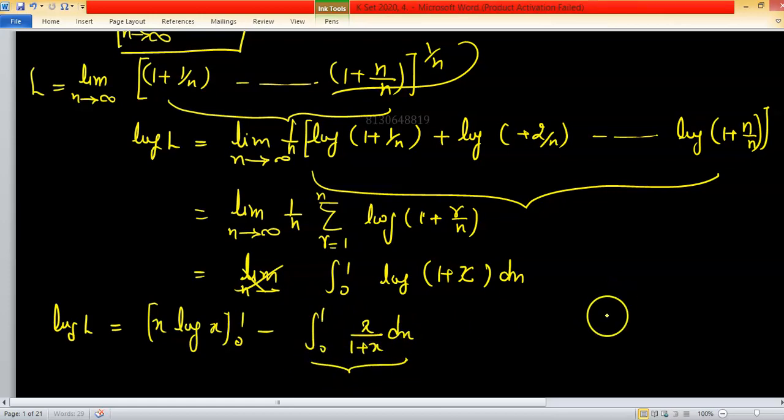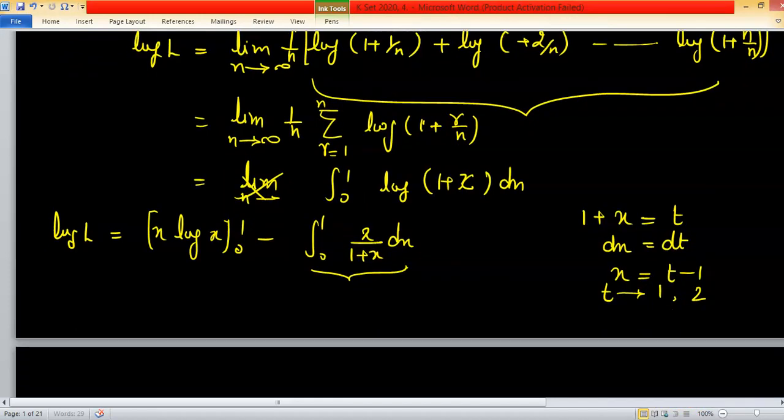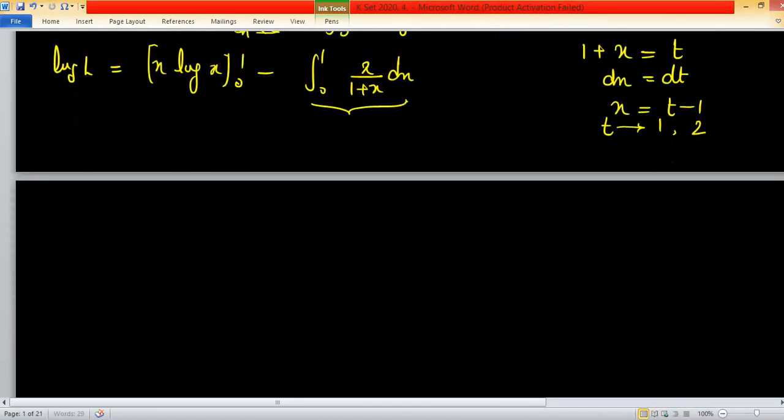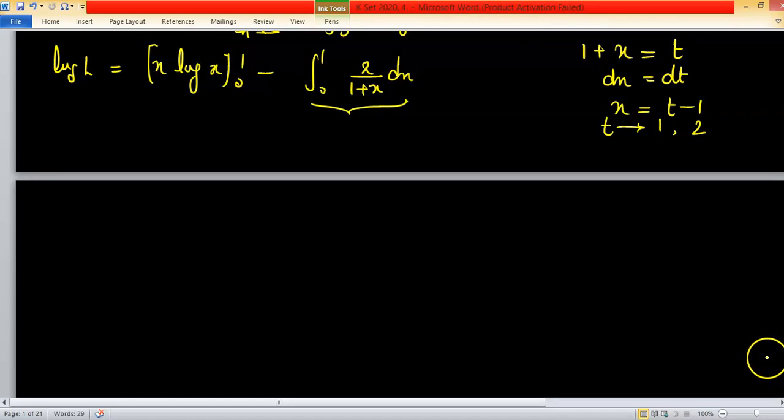To find this one we can consider 1 plus x as t from this dx equals to dt and x equals to t minus 1 and new limits of t is 1 to 2. Or you can use old limit but keep remember when you already put it for functions for values expression for x.